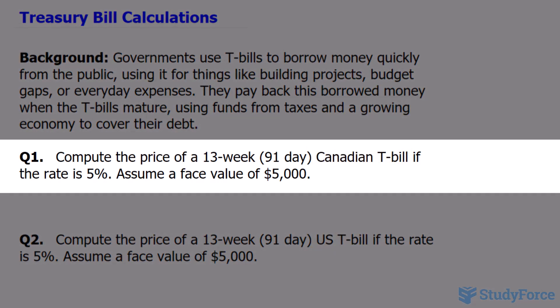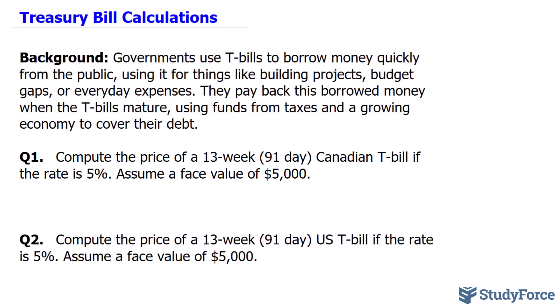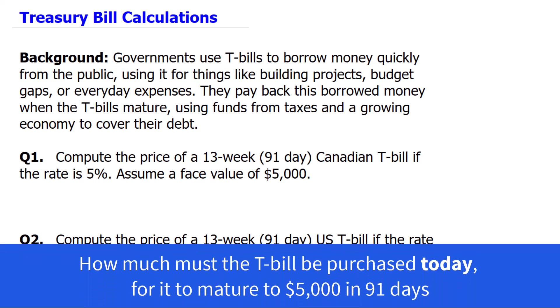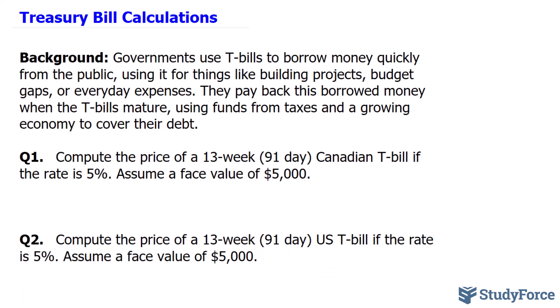In question number one, we're asked: compute the price of a 13-week or 91-day Canadian T-bill if the rate is 5%. Assume a face value of $5,000. What this means is that the government will pay you back $5,000 after 91 days if a certain amount of money is used to purchase the T-bill. So what we're looking for is how much the T-bill must be purchased today for it to mature to $5,000 in 91 days. To calculate this, we'll use a simple interest model.